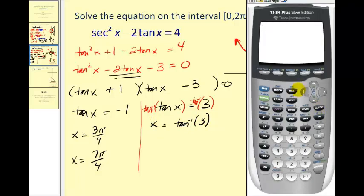Make sure we're in radian mode. We are. So second tangent brings up the inverse. Looks like we have approximately 1.25 radians.